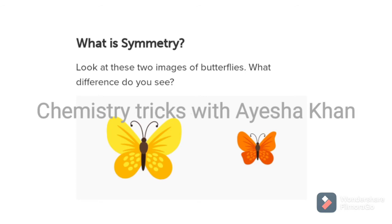Now look at butterfly B — its wings are not alike at all. Their shapes are different. If we cut them and try to overlap or flip them, one wing does not match the other at all. That means butterfly B is asymmetrical.